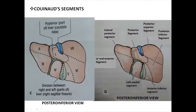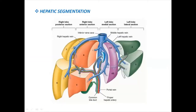On the posterior inferior view, the caudate lobe representing segment 1 is visible. On the left hemiliver, segments 2, 3, and 4 (the quadrate lobe) are seen, and on the right hemiliver, segments 5, 6, and 7—segment 8 cannot be viewed from the posterior inferior aspect. Segment 1 is a special segment because it is supplied by both the right and left hepatic ducts and the corresponding vessels.